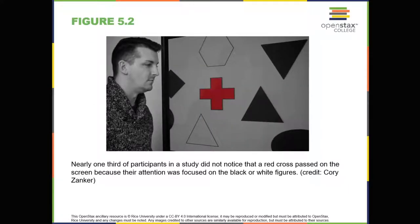In a similar experiment, researchers tested inattentional blindness by asking participants to observe images moving across a computer screen, instructing them to focus on either white or black objects while disregarding the other color. When a red cross passed across the screen, about one-third of subjects didn't notice it.